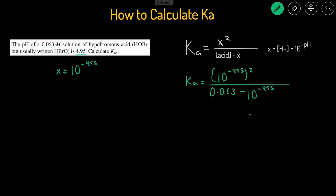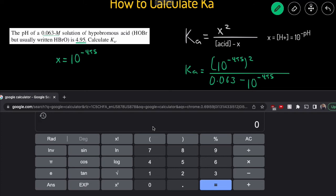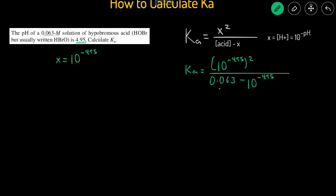Okay, now let's plug this into the calculator and see what we get. We'll start by doing 10 to the negative 4.95 squared, and then divide it by 0.063 minus 10 to the negative 4.95. And then that gives us roughly about 2 to the power of negative 9. So that's what the Ka is equal to, 2.0 times 10 to the negative 9.